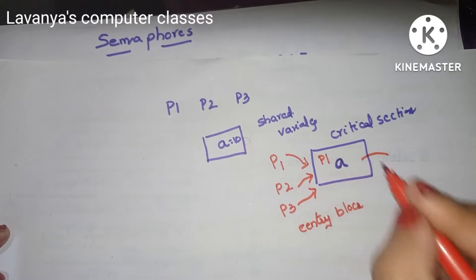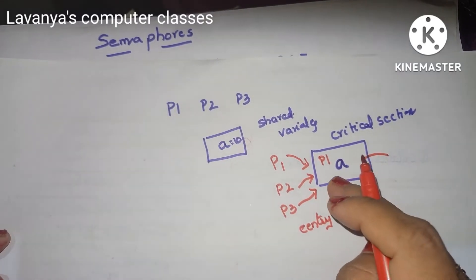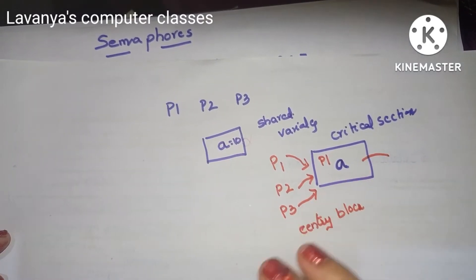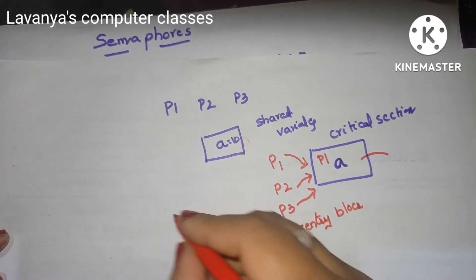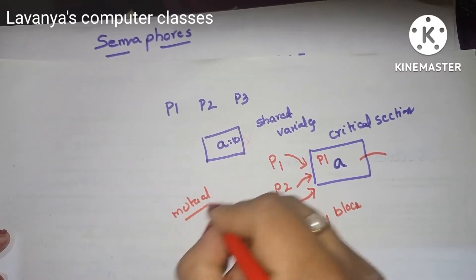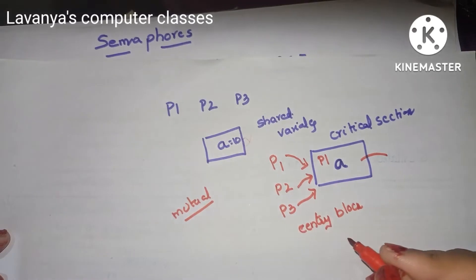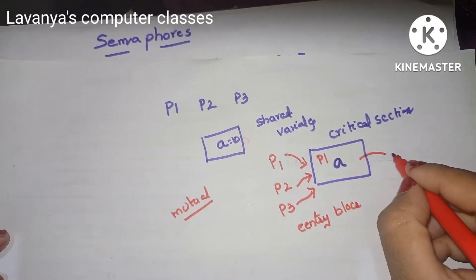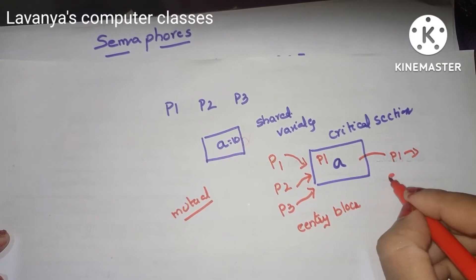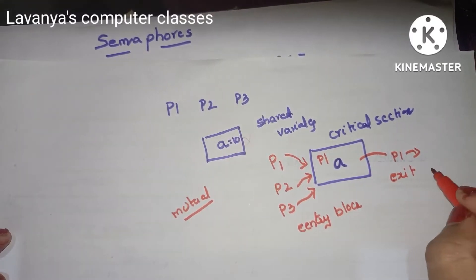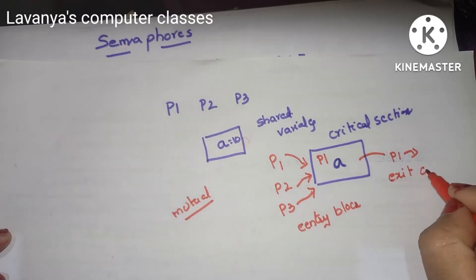For example, P1 is entering the critical section and using variable A. P2 and P3 are waiting — this is called mutual exclusion. Once P1's work is over, P1 comes out of the critical section.